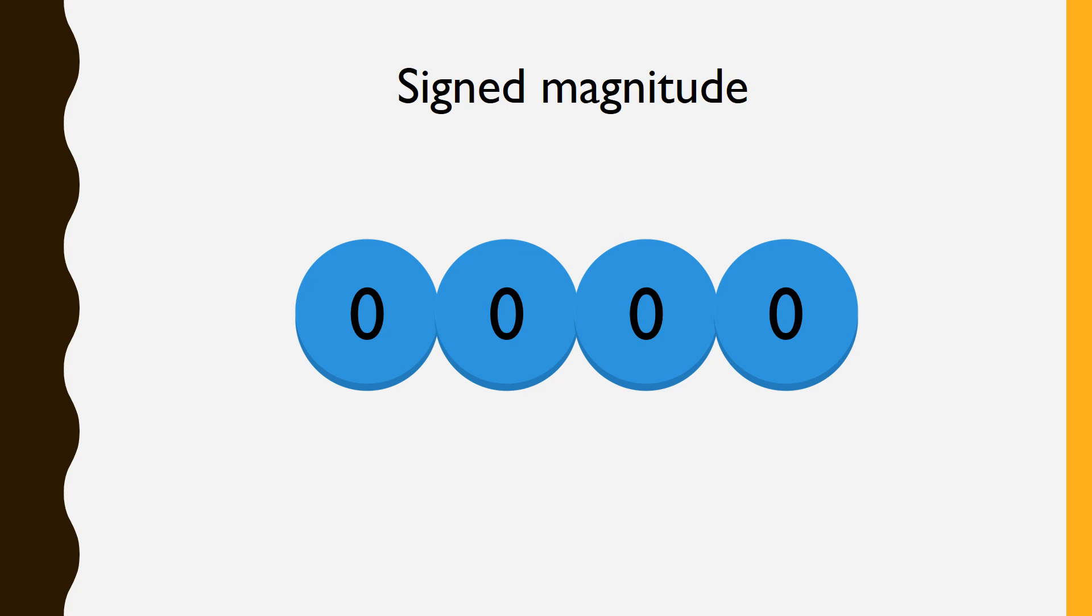Let's talk about signed magnitude first. This approach, just like the other two approaches we'll see, tries to solve the problem of representing negative numbers on bit patterns. It does this by taking a bit pattern, like this 4-bit figure, and reserving the most significant bit, the leftmost bit. This becomes the signed bit, and a 0 indicates that the remaining bits should be treated as positive, while a 1 indicates the remaining bits should be treated as negative.